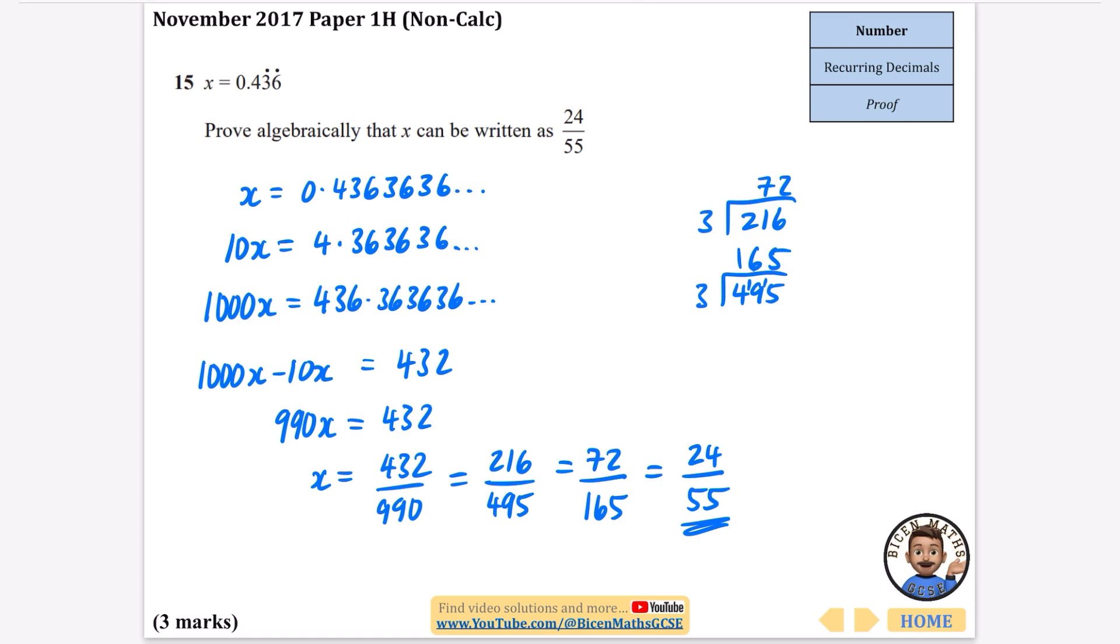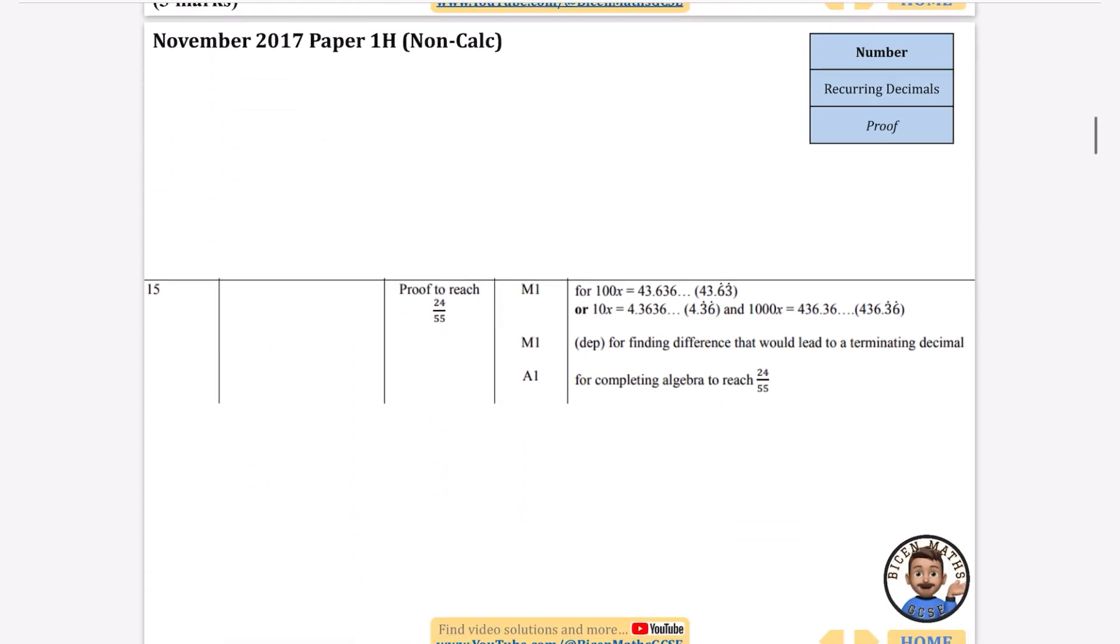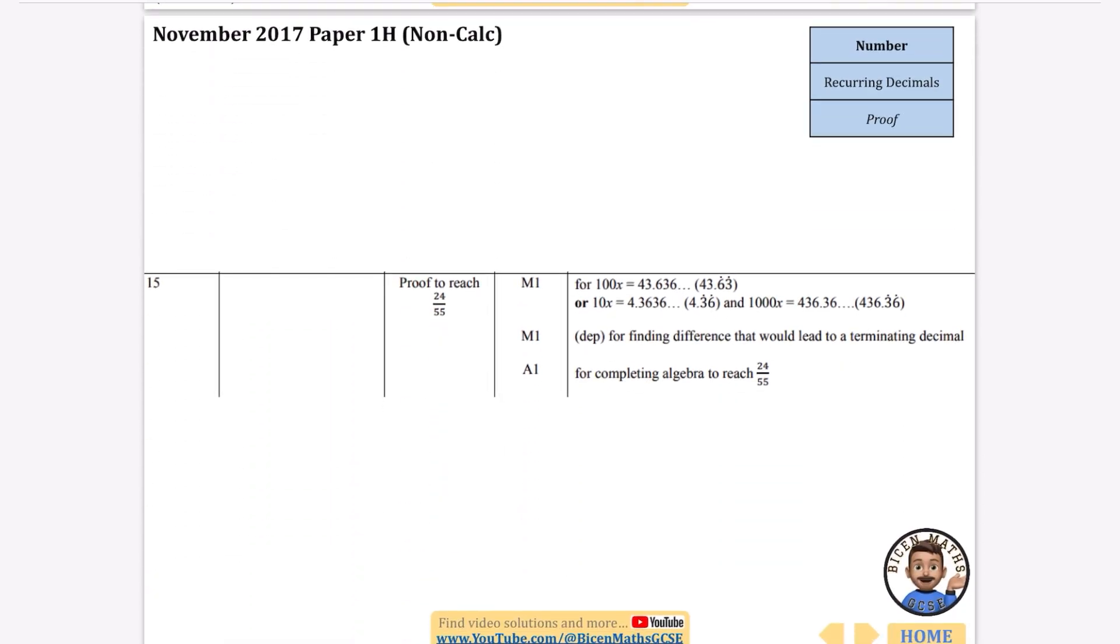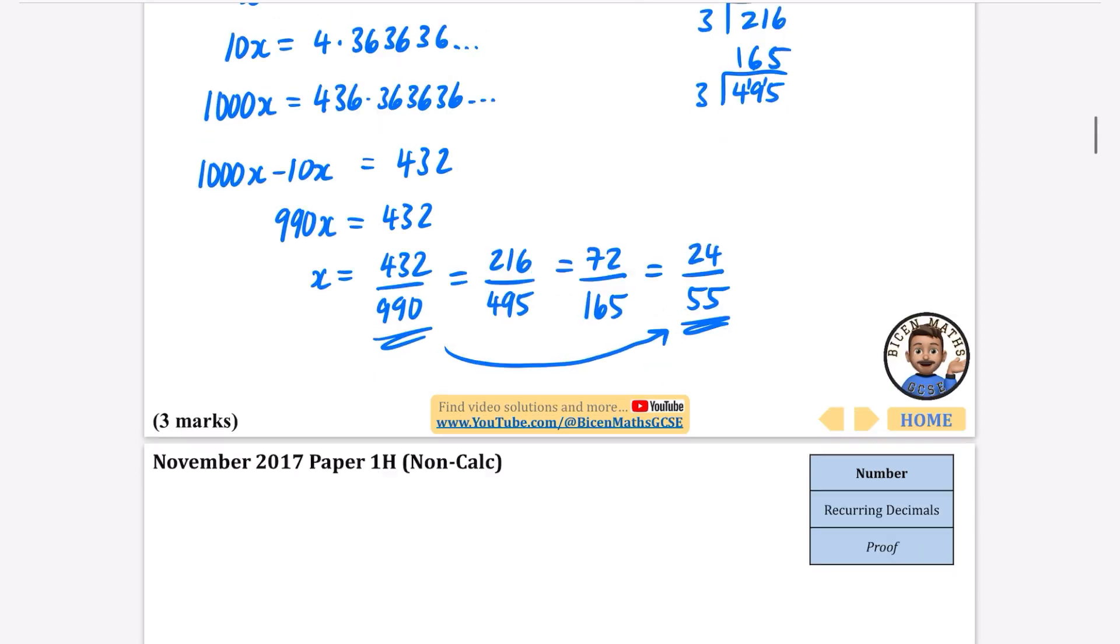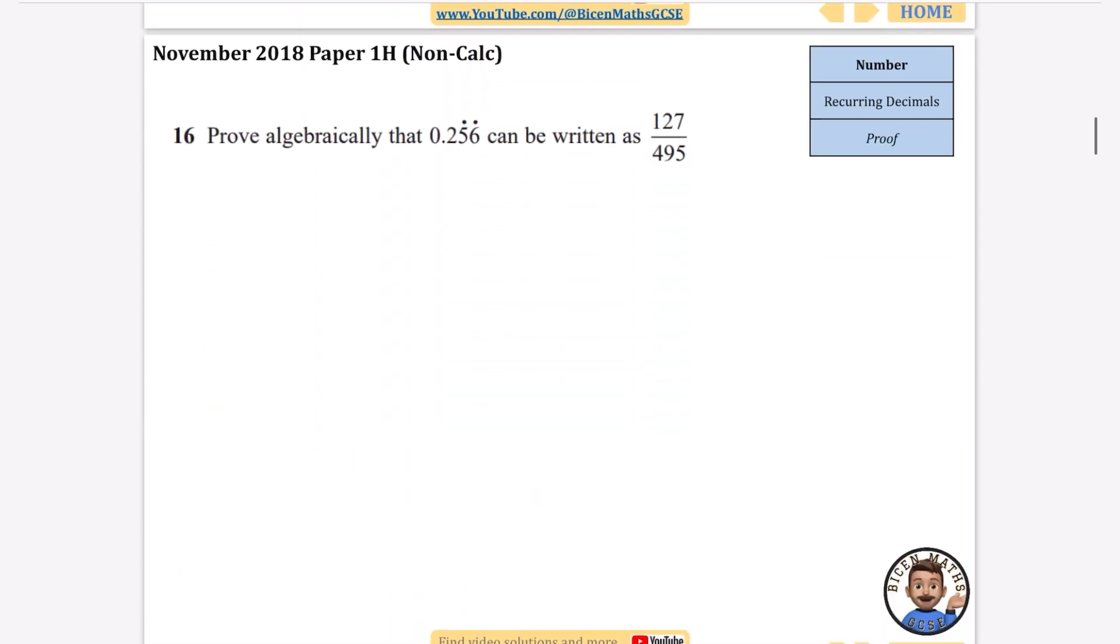I'm going to do 216 divided by 3, that's 72, and 495 divided by 3 gives 165. So we get 72 out of 165, and it looks like it might divide by 3 again. 72 divided by 3 is 24, and 165 divided by 3 is 55. I wonder how much of that they're going to need you to show. You probably could have just gone straight from 432 over 990 to 24 over 55 and still been given the marks.